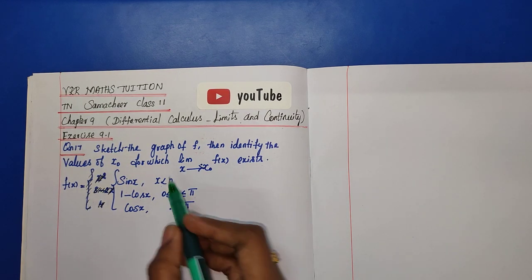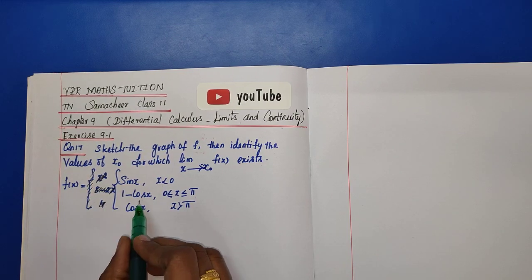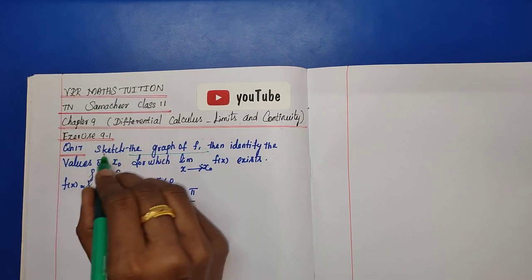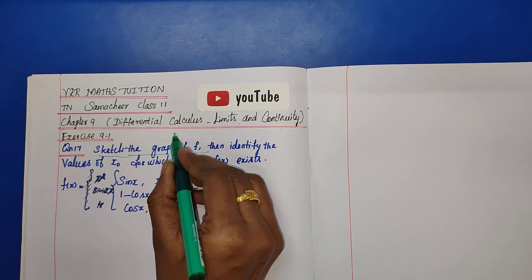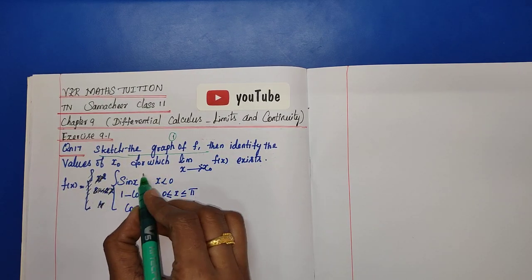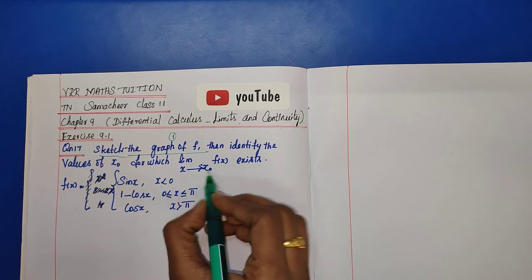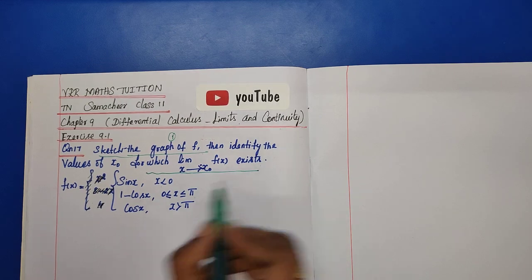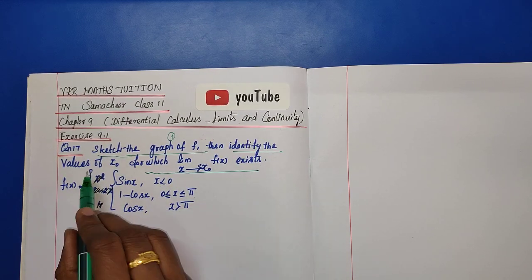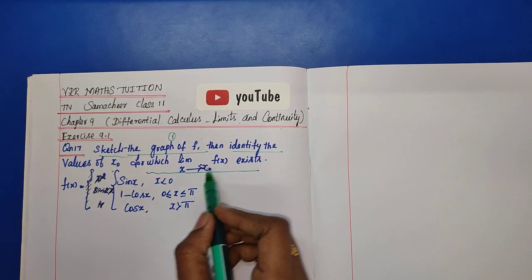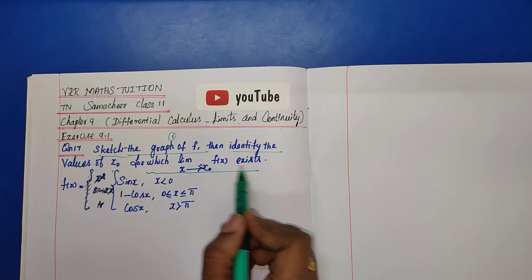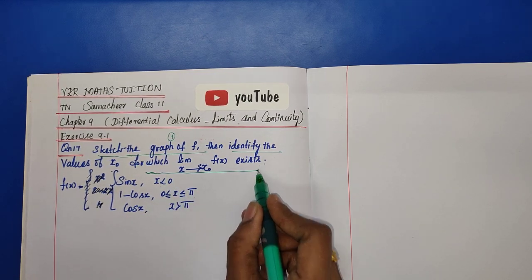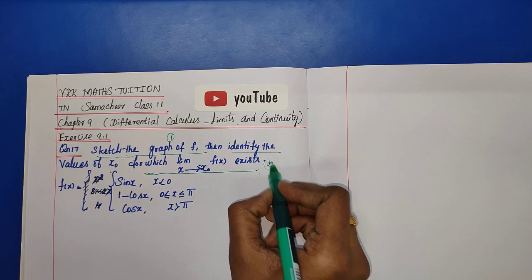In the question, we first sketch the graph of f — that is task number one. Then, task number two, we identify the values of x0 for which the limit as x tends to x0 of f(x) exists.